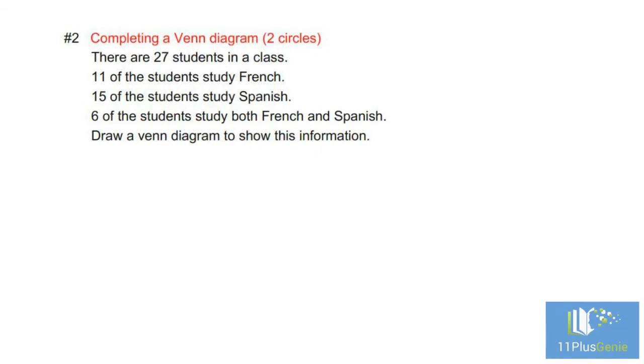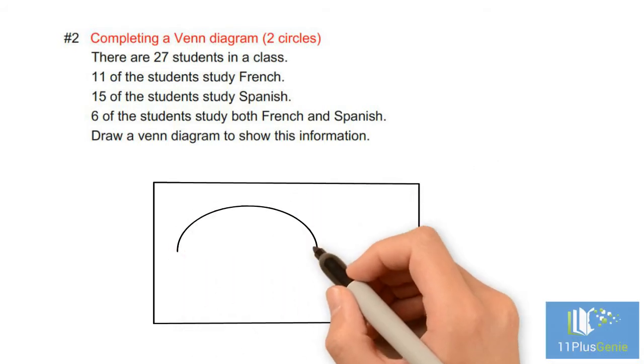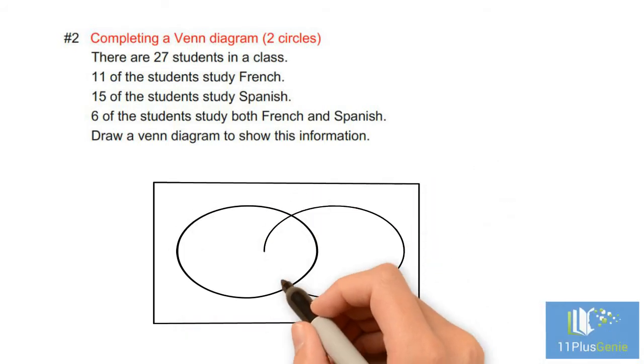Number 2. Completing a Venn diagram with 2 circles. There are 27 students in a class. 11 of the students study French. 15 of the students study Spanish. 6 of the students study both French and Spanish. Draw a Venn diagram to show this information.